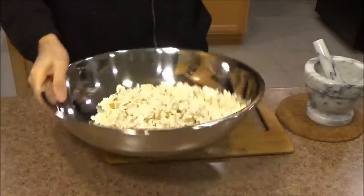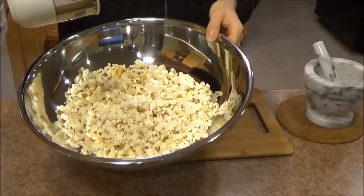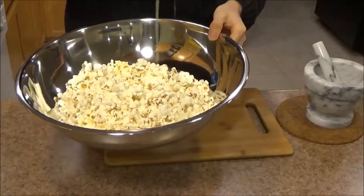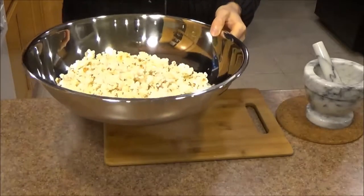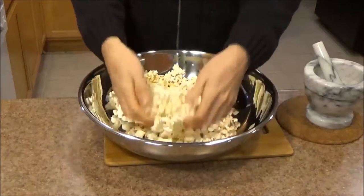The popcorn is done so now it's time to add our seasonings. So we're going to start by dripping the butter over it trying to cover as much as we can. And it's not going to be perfect but we're going to do our best. And I'm just going to take it and very lightly toss it together.